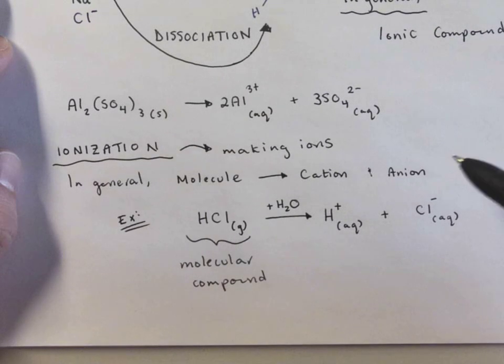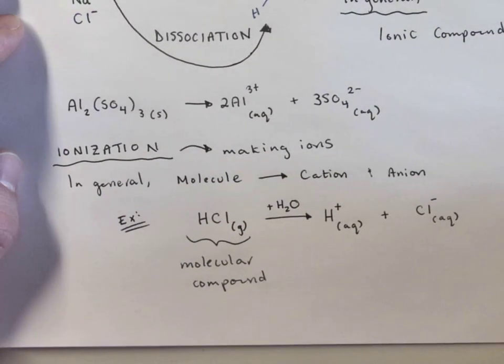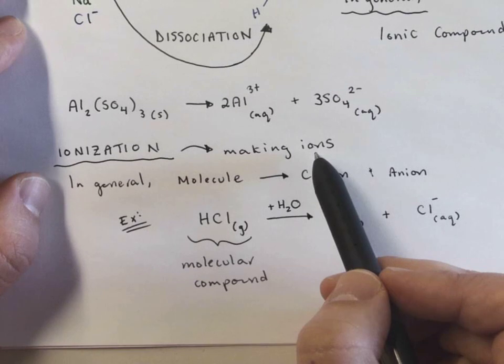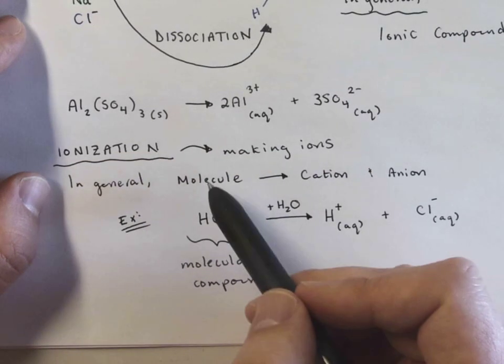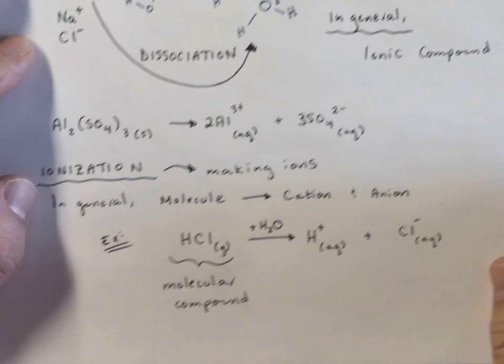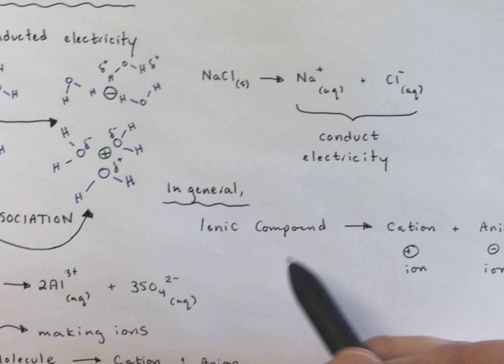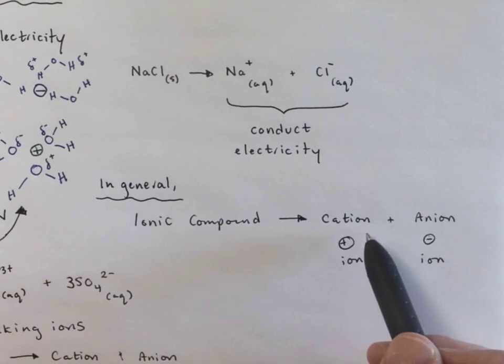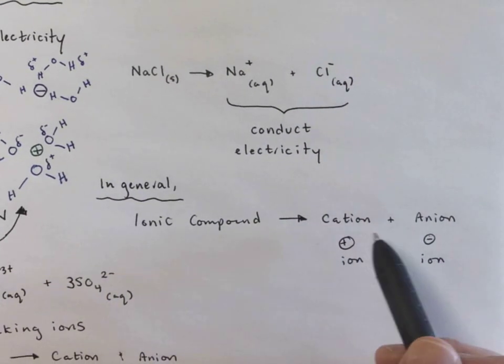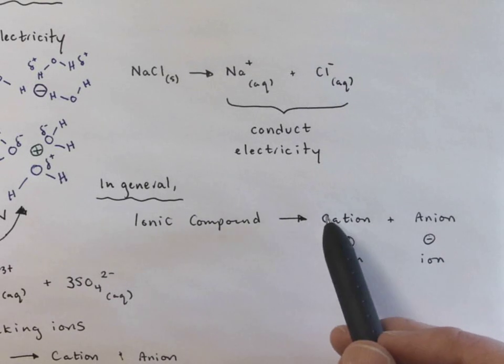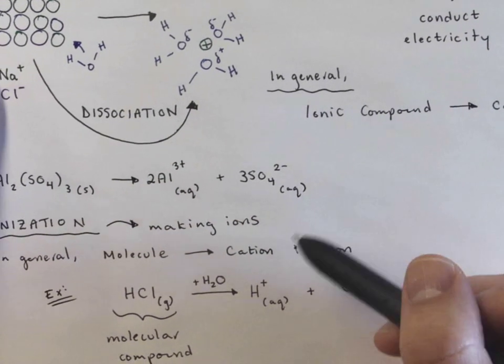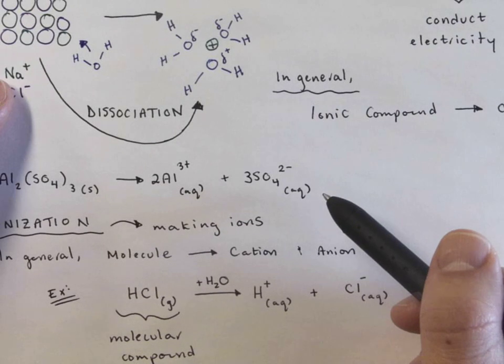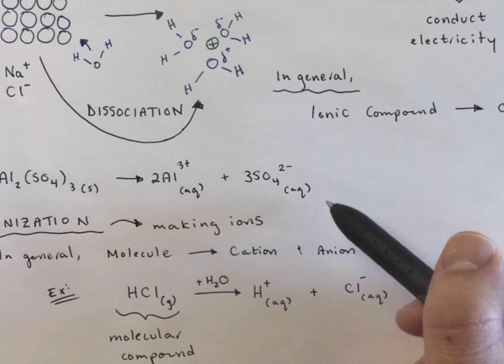So ionization, making ions from neutral molecular compounds. Dissociation, I'm taking an ionic compound, dissolves in water to make cations and anions. Both of them result in solutions that can conduct electricity. It's just a different kind of a different process that's occurring.